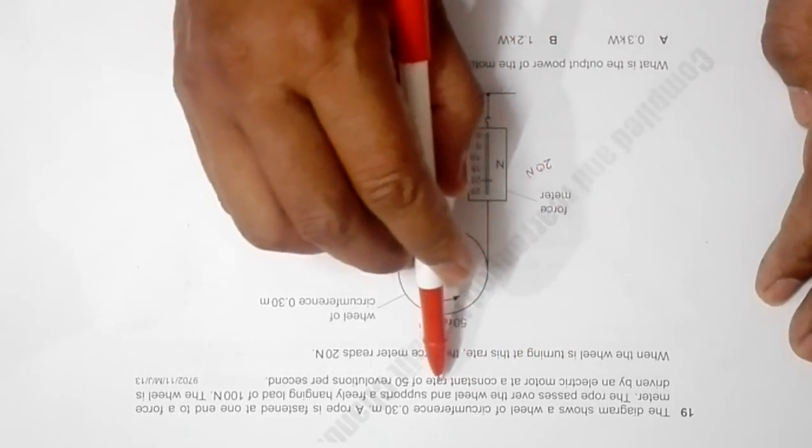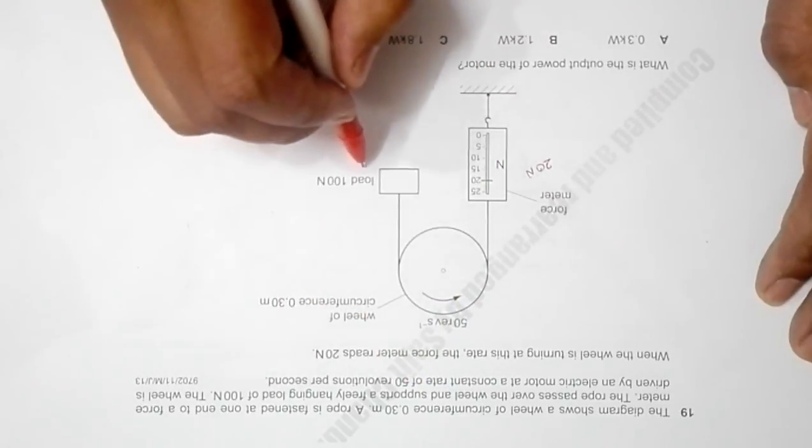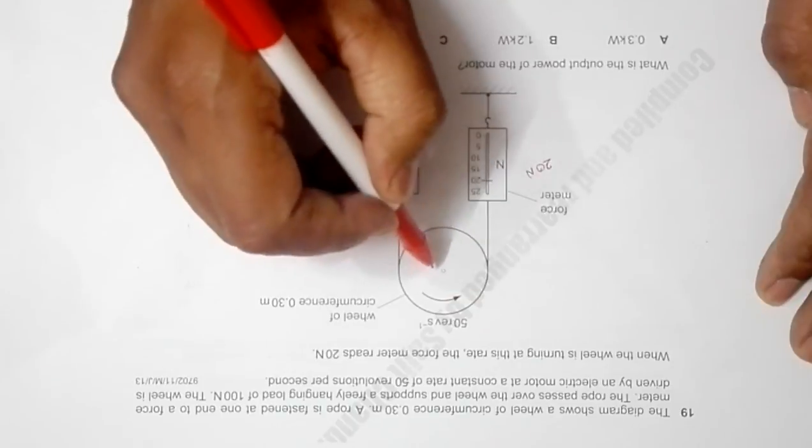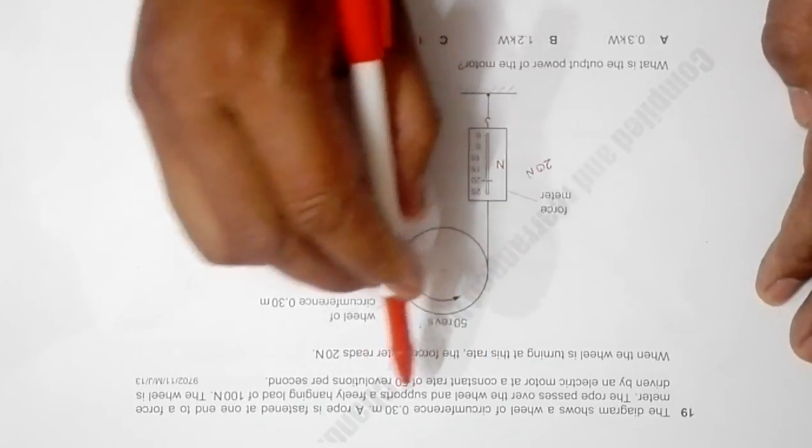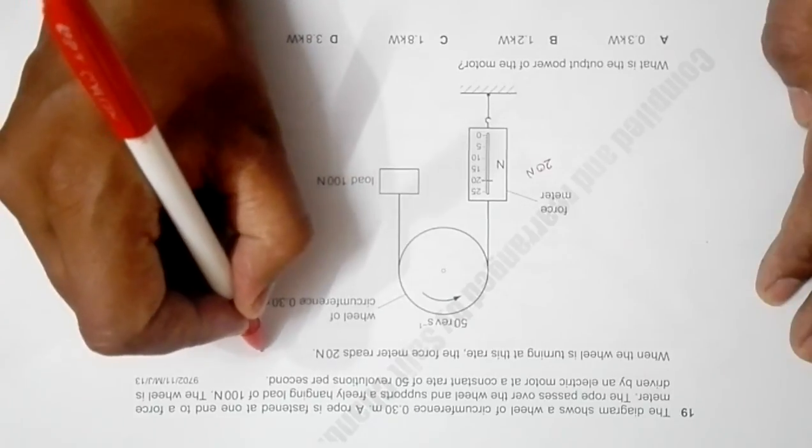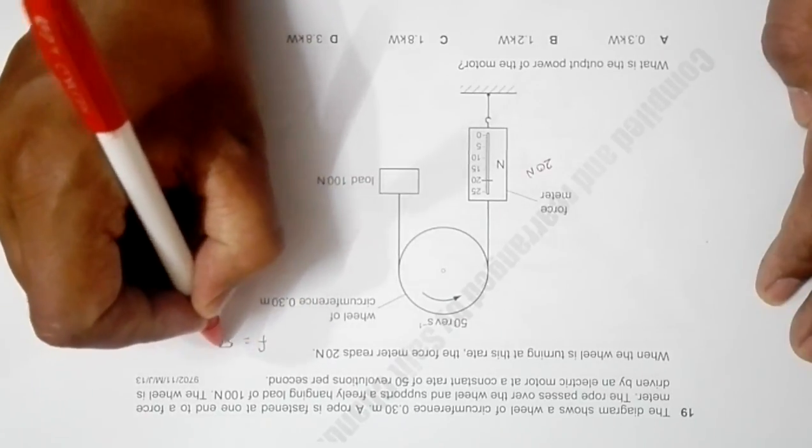The rope passes over a wheel and supports a freely hanging load of 400 Newtons. The wheel is driven by an electric motor at a constant rate of 50 revolutions per second, so this frequency is equal to 50 Hertz.